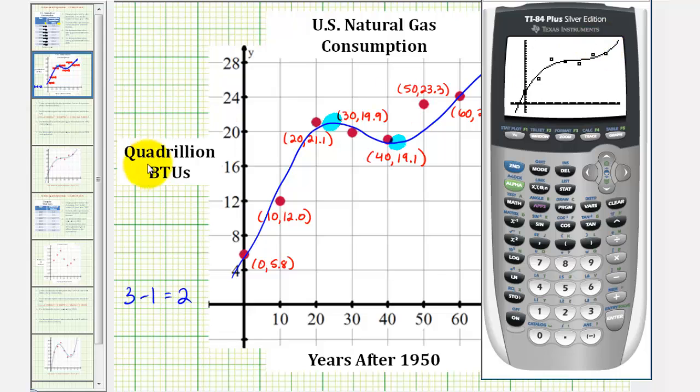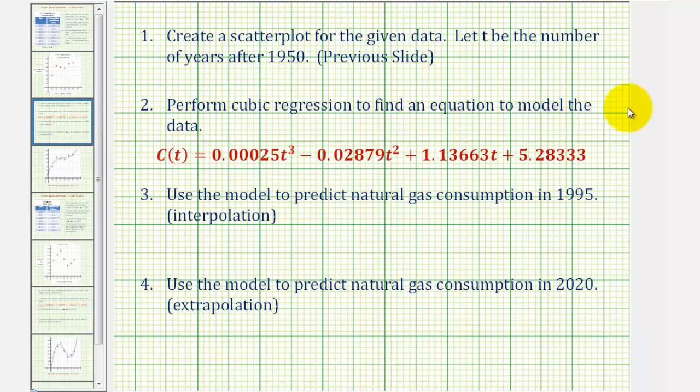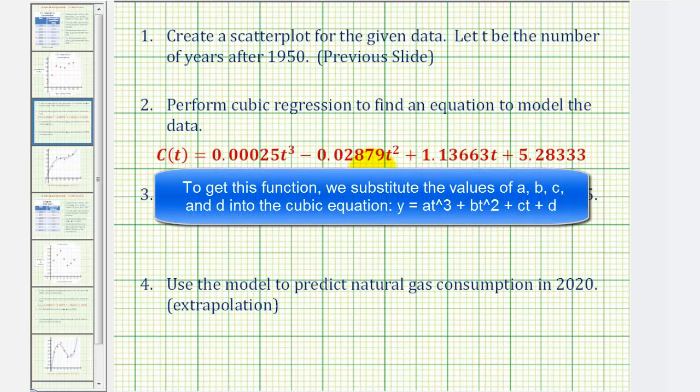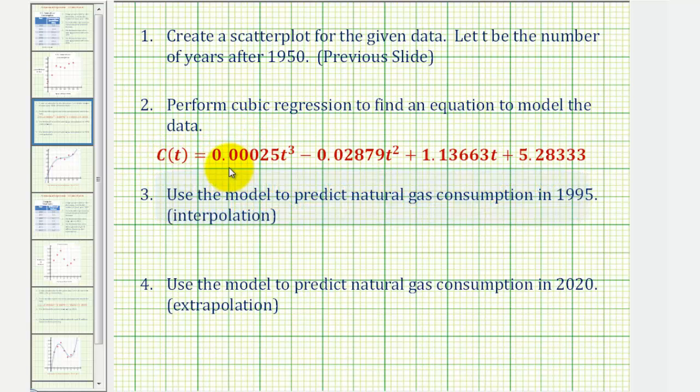Now let's go back to our questions. Number one, we were asked to create a scatter plot, which we already did on the previous slide. Number two, if we just performed the cubic regression to five decimal places, this would be our function. Notice how we're using T instead of X, and we're using C of T instead of Y. So now we can use this model to make predictions.